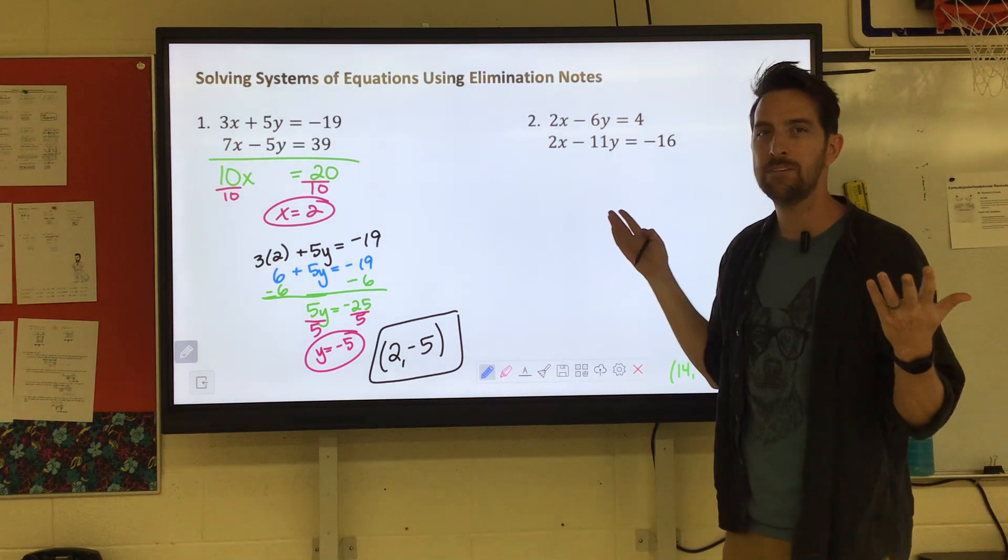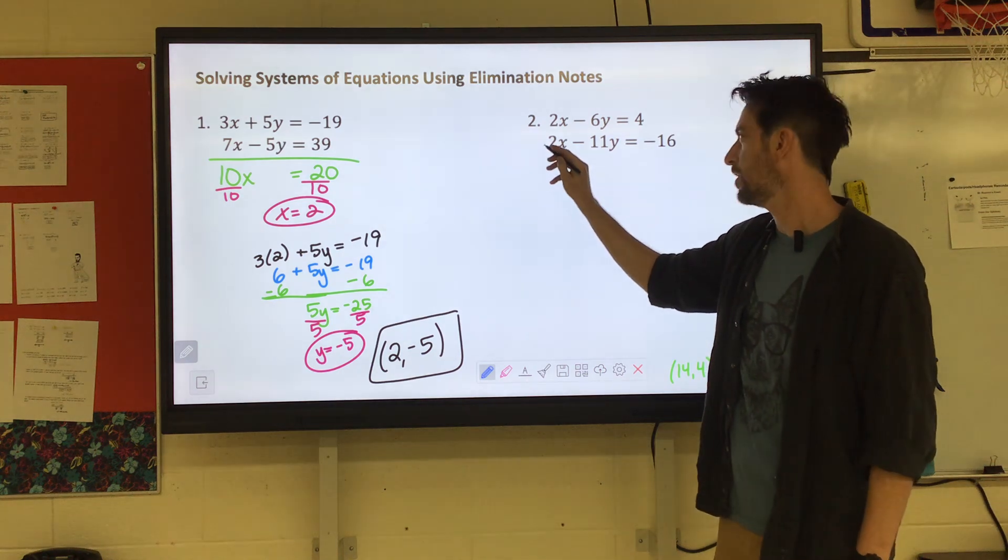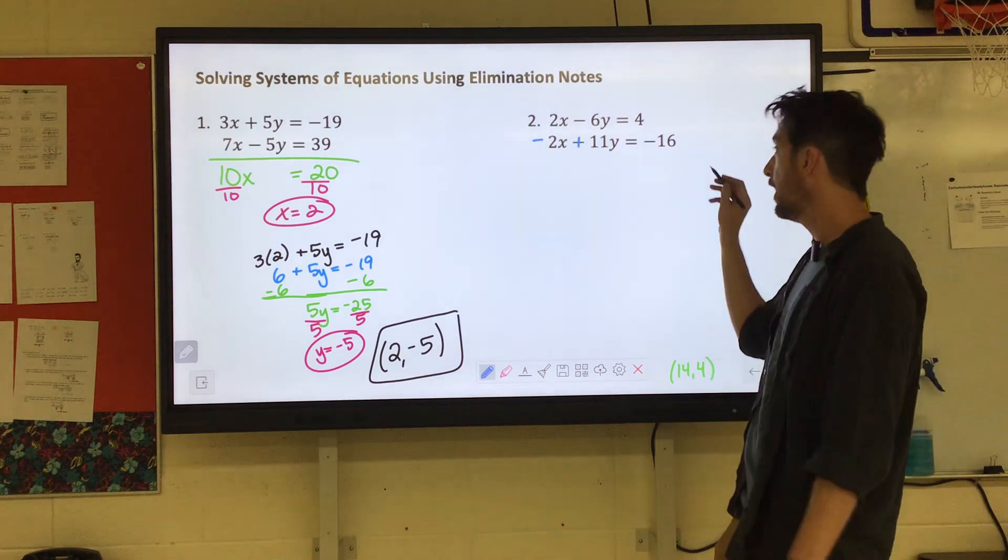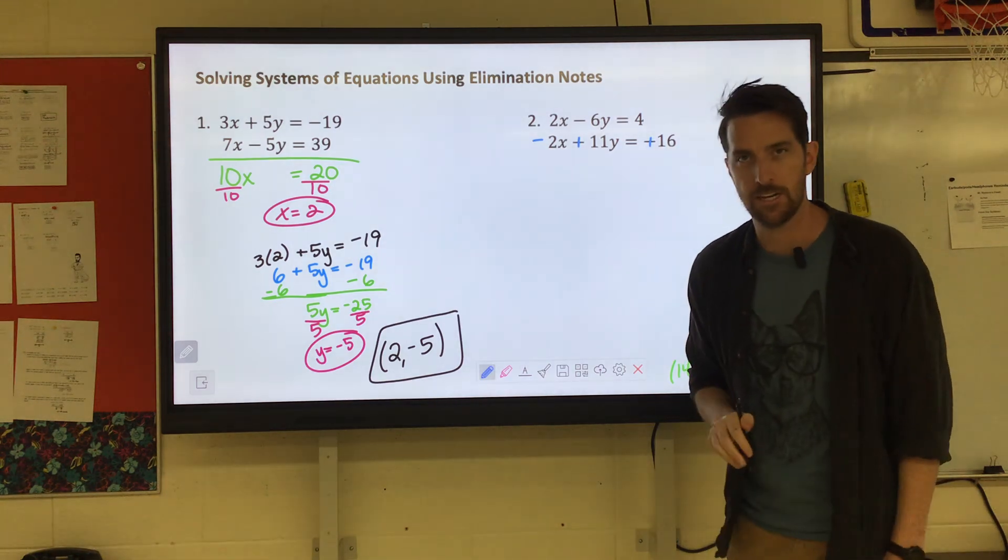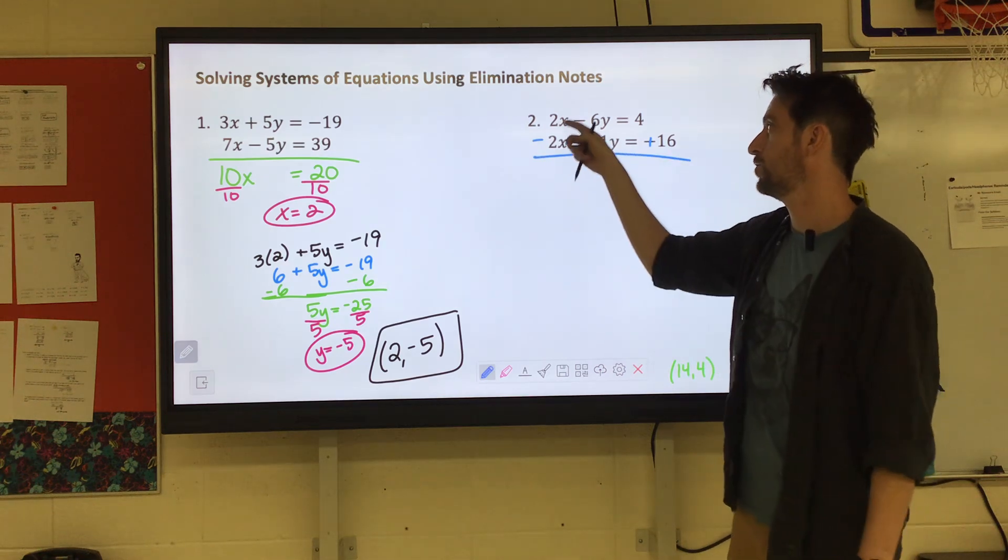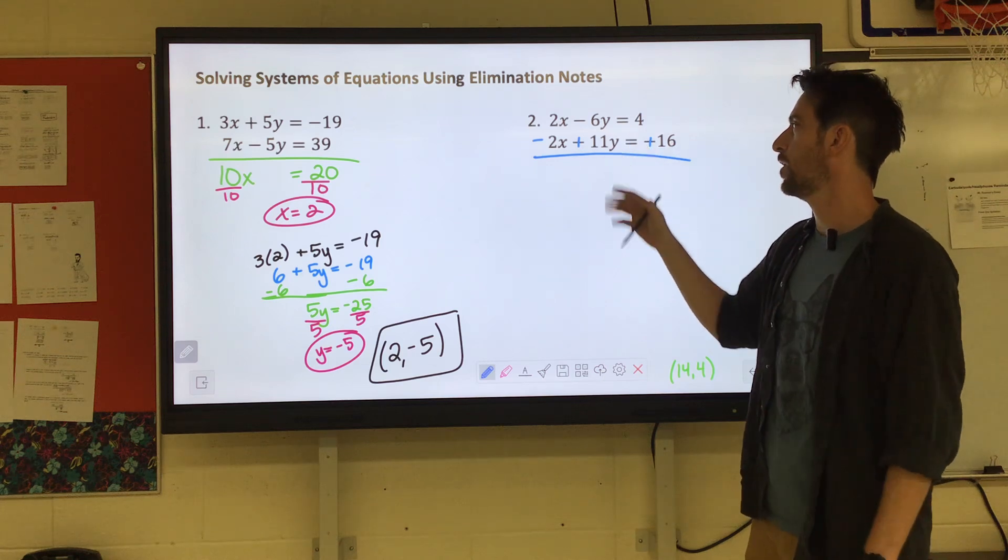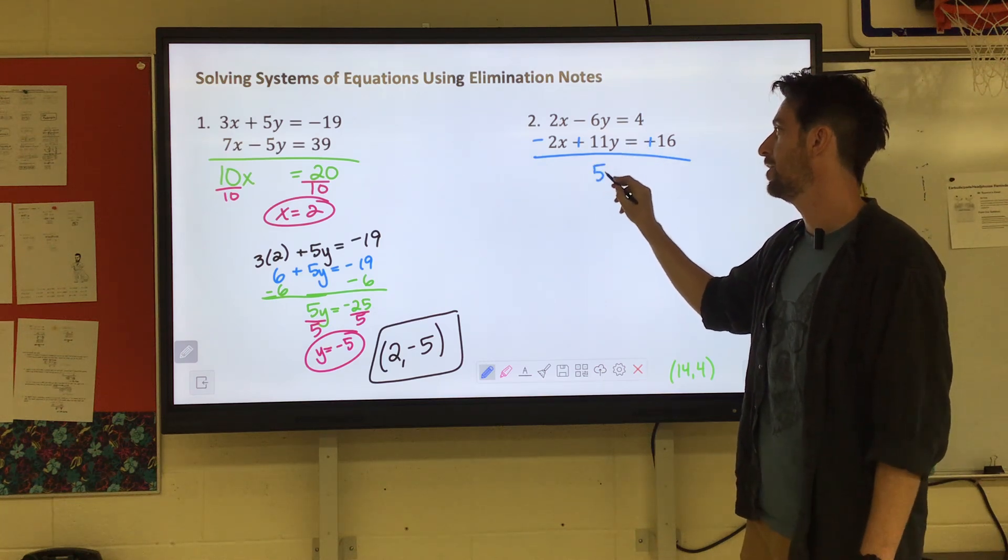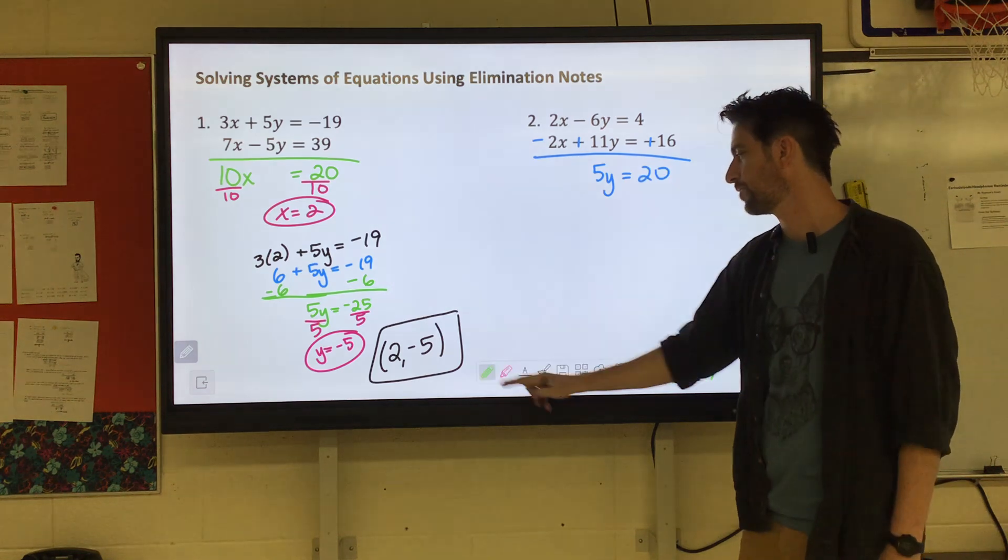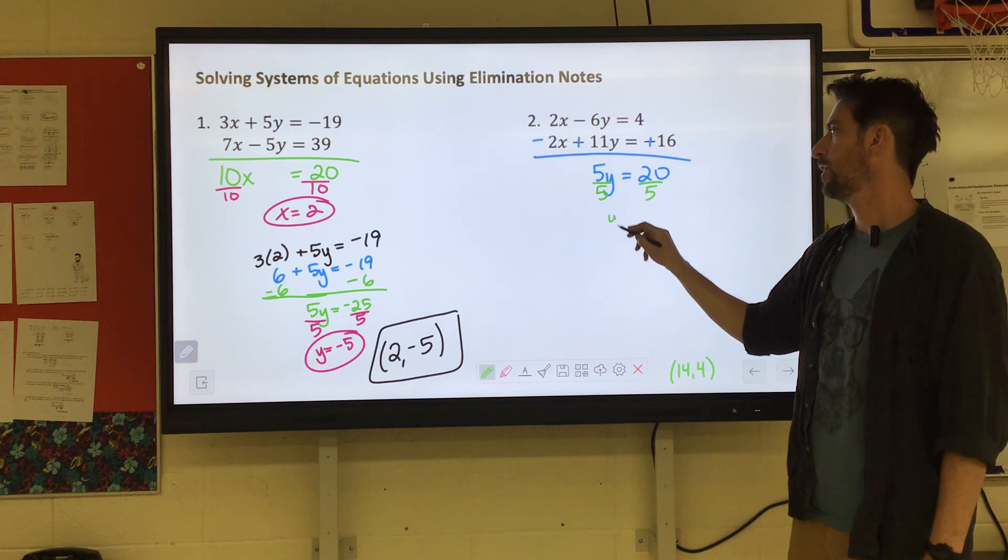So pick one line and multiplying by negative 1 just change everything. I'm going to change the second equation. Negative 2X plus 11Y equals positive 16. That's multiplying that equation by negative 1. Now if we go straight down, 2X minus 2X eliminated. Negative 6Y plus 11Y is 5Y and 4 plus 16 is 20. Divide by 5. Y equals 4.